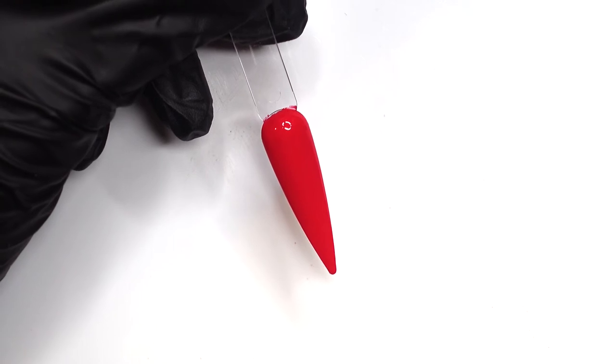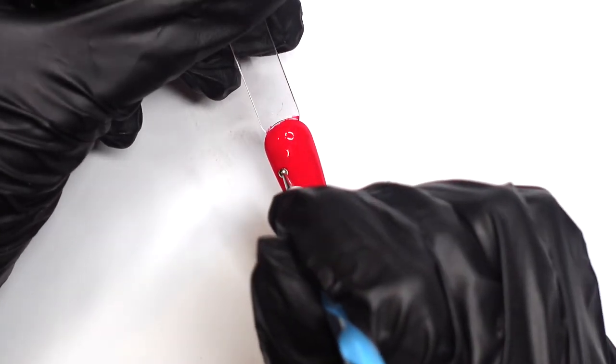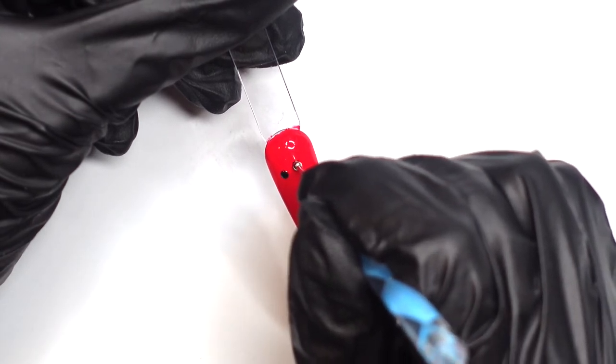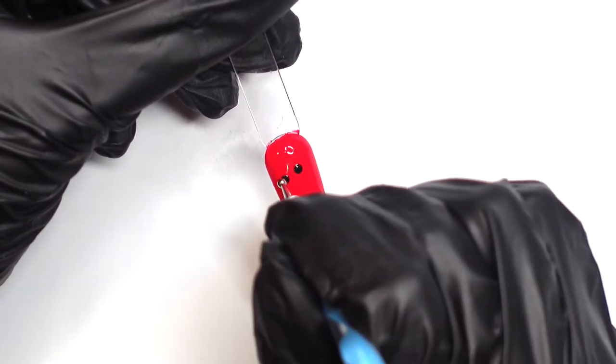What you're going to do is take your dotting tool and dip it in the paint. You're just going to go ahead and place those two dots down. These two dots will serve as those rounded edges on the heart.